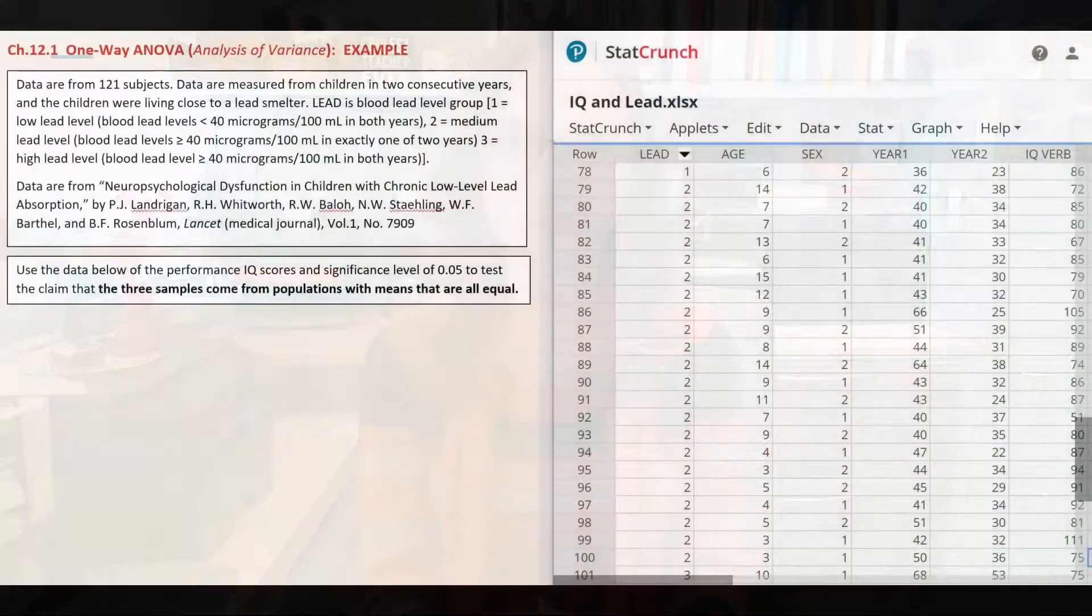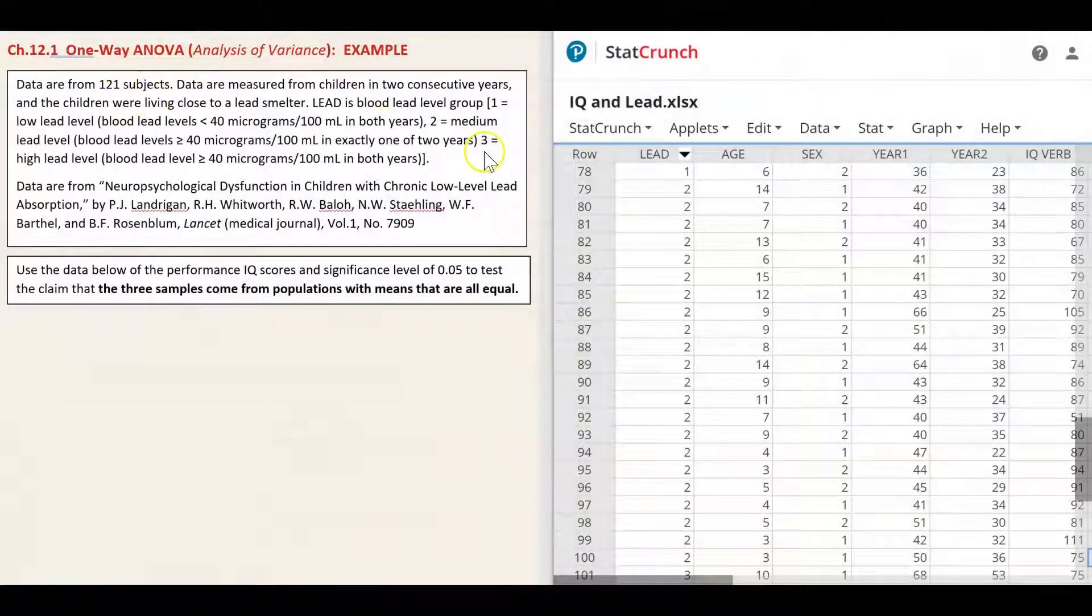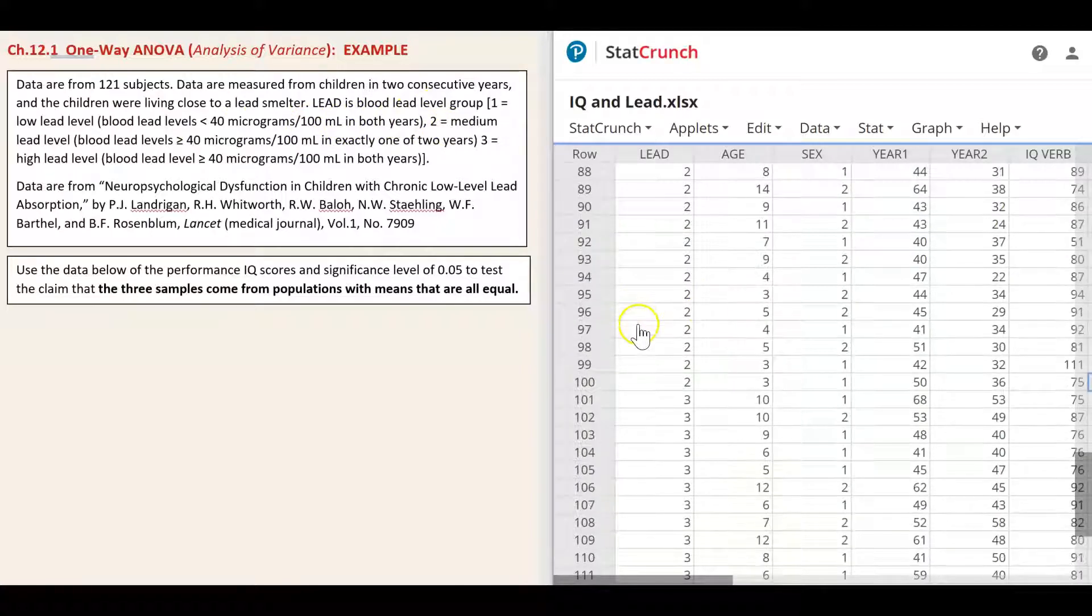Data for this example is from 121 subjects. Data are measured from children in two consecutive years and the children were living close to a lead smelter. Lead column is blood lead level. Group one equals low lead level: blood lead levels less than 40 micrograms per 100 milliliters in both years. Two equals medium lead level: blood lead levels greater or equal to 40 micrograms per 100 milliliters in exactly one of two years.